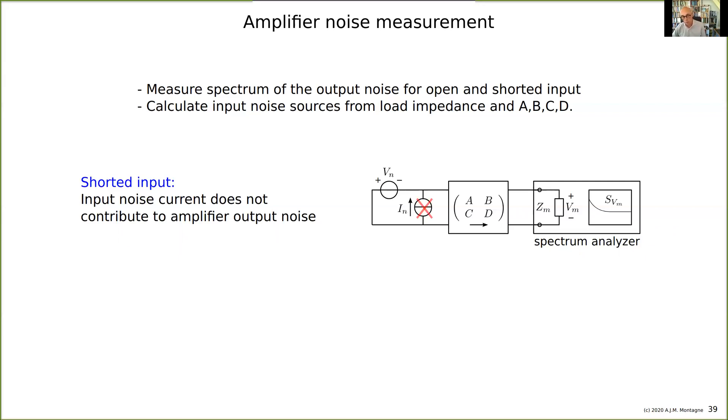Which means that together with ABCD and Vn, I can measure the spectrum of Vn. So by shorting it we can measure the equivalent input noise voltage.